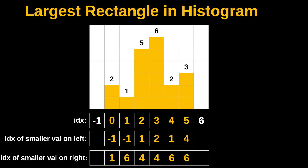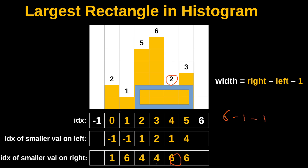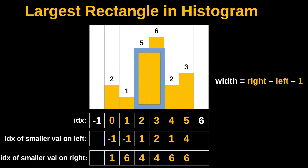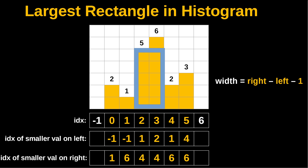Once we have both sets of values, we can calculate the width for each bar. The formula is: width = right - left - 1. For example, the rectangle with height 2 gives us 6 minus 1 minus 1, which equals 4. For height 5, we have 4 minus 1 minus 1, giving a width of 2. Now that we know how to establish the width for each bar and we also know the height, it's straightforward to calculate the largest area from each individual bar.